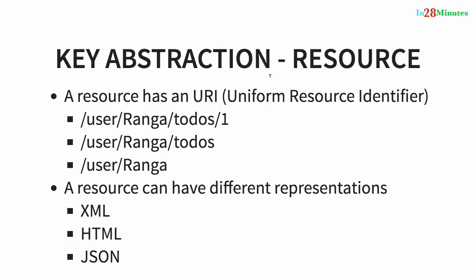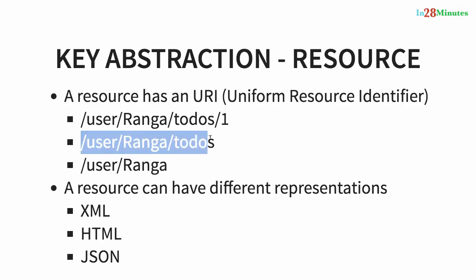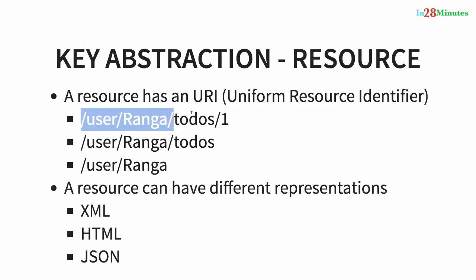We assign a URI to each resource. For example, the URI for the resource Ranga is /user/Ranga. The URI for all of Ranga's to-dos is /user/Ranga/todos. The URI for the first to-do Ranga has is /user/Ranga/todos/1. So, we assign a URI to each resource.